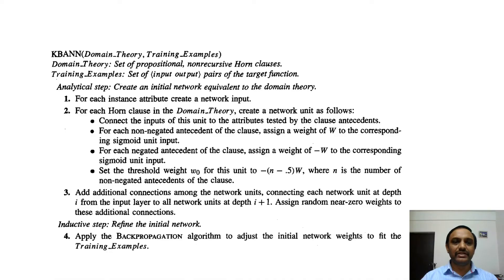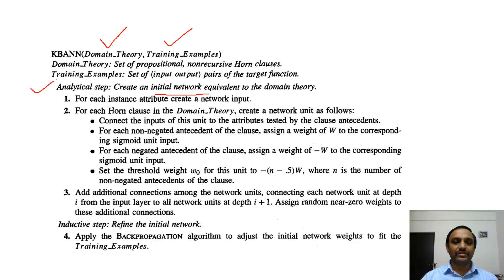Here is the Knowledge-Based Artificial Neural Network algorithm. This algorithm takes two inputs: one is domain theory or prior knowledge, and the second is training data. First, we perform the analytical step: using prior knowledge, we construct the initial network. The initial network contains interconnections and weights. For each non-negated antecedent of the clause, we assign a positive weight, meaning the instance which has more effect on the target output receives more positive weightage, corresponding to the sigmoid unit input.